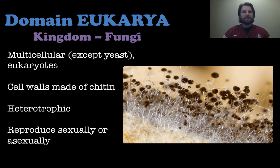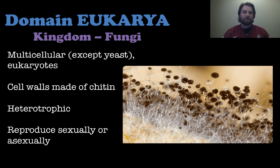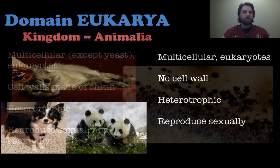The next kingdom within eukarya is fungi. These are multicellular organisms, except for yeast, which is a single-celled organism. They are eukaryotes and their cell walls are made of chitin. They are heterotrophic, and they can reproduce sexually or asexually depending on the type of fungus. Fungi includes lots of different things, like the mushrooms you've no doubt seen in the environments around you.